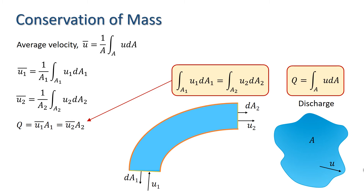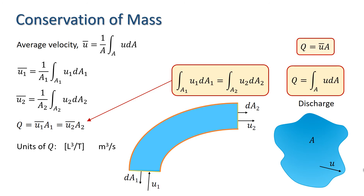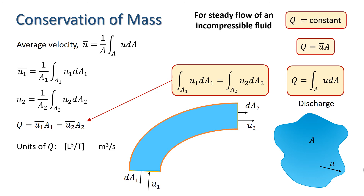Discharge is a very important concept in fluid mechanics, and it's often defined simply as average velocity times area. It has units of length cubed divided by time, which in SI units is meters cubed per second. What we have shown, then, is that for steady flow of an incompressible fluid, the continuity equation can be simply stated as: discharge is constant.